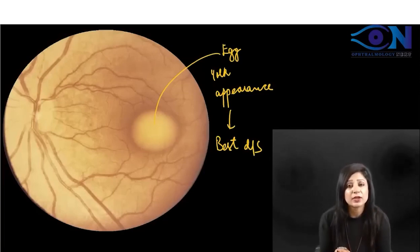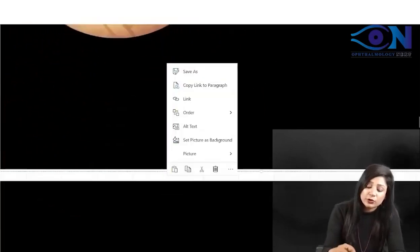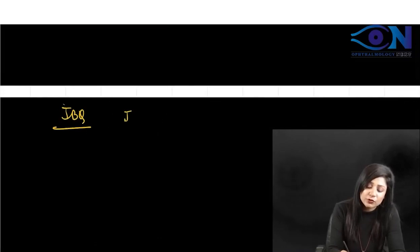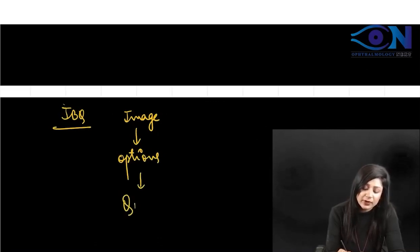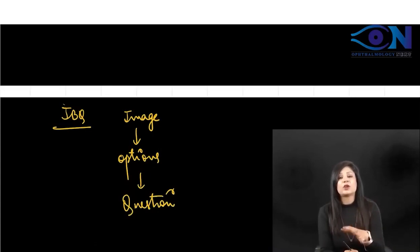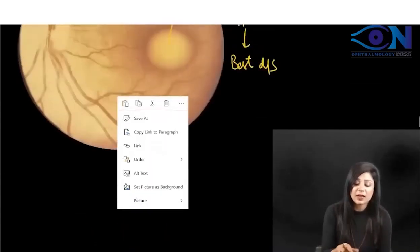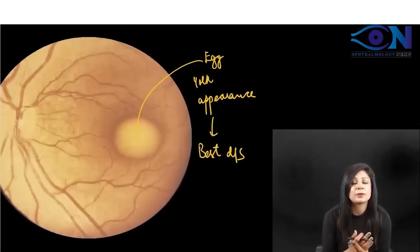Sometimes if you are not able to identify which image it is, please try to see the options. Whenever you get an image-based question, you have to first see the image, then read the options, and only then read the question. Go in this order: first the image, then the options, then the question.